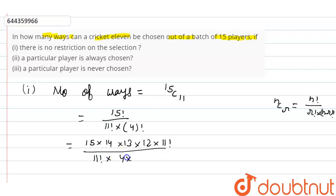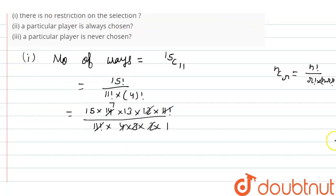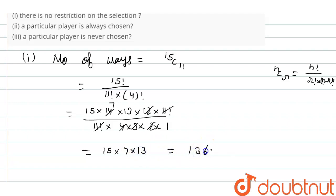Factorial 11 cancels out. Then 4 × 3 = 12 cancels with 12, and 14 cancels to give 7. So we are left with 15 × 7 × 13, which equals 1365. This is the answer for condition one.